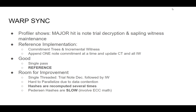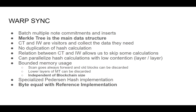So what we want to do to reduce all that is to flip the model around. Instead of having the commitment tree and incremental witness as the main pieces of data, the only major piece of data is now the Merkle tree. The Merkle tree will be calculated once and updated once.